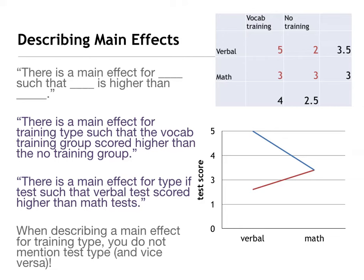There was no difference in math scores whether someone got the vocabulary training or not. However — there's our caveat statement — there was a difference for vocabulary training on the verbal test, where verbal scores were higher with vocabulary training. Which is what you'd expect: verbal training helps verbal scores but has no effect on math scores. Notice I talked about all four conditions — no training math, no training verbal, vocabulary training math, and vocabulary training verbal — and described how something different was going on in one condition versus the other.